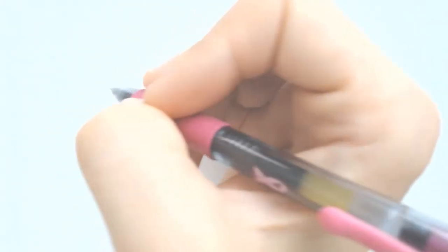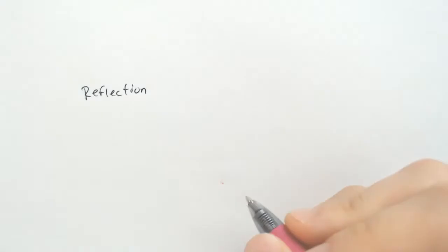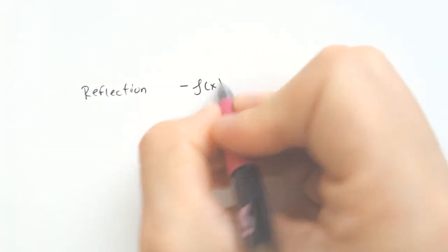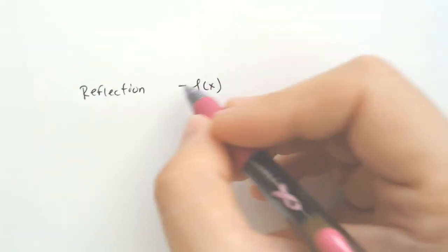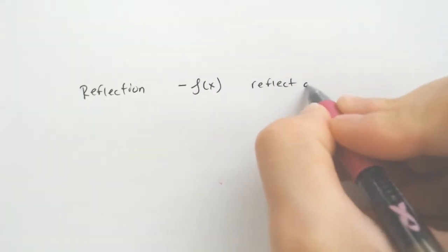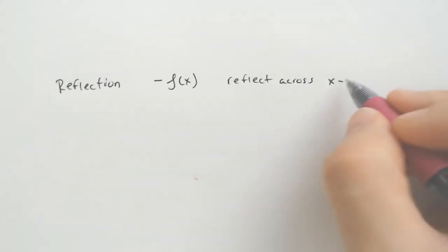There are three big rules that you need to know about for reflection. If it is a reflection, you can have a reflection of negative f of x. So if you took the regular function and then you made the entire thing negative, it would reflect across the x-axis.